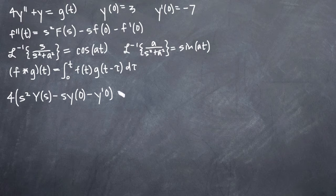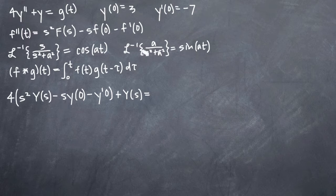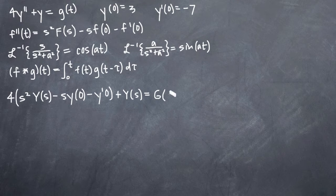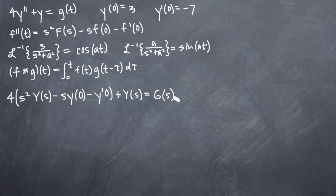The Laplace transform for y will be Y(s), and the Laplace transform for g(t), since we don't know what g(t) represents here, we'll only be able to call it G(s). What this will allow us to do is, at the end of our problem when we find our original function, it will be in general terms of g(t) and we'll have a general formula into which we can plug in any g(t).